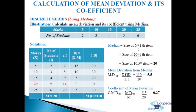Fourth column: d = x − M, where x is marks and M is median (20). So: 5−20=15, 10−20=10, 15−20=5, 20−20=0, 25−20=5 (ignoring negative signs).